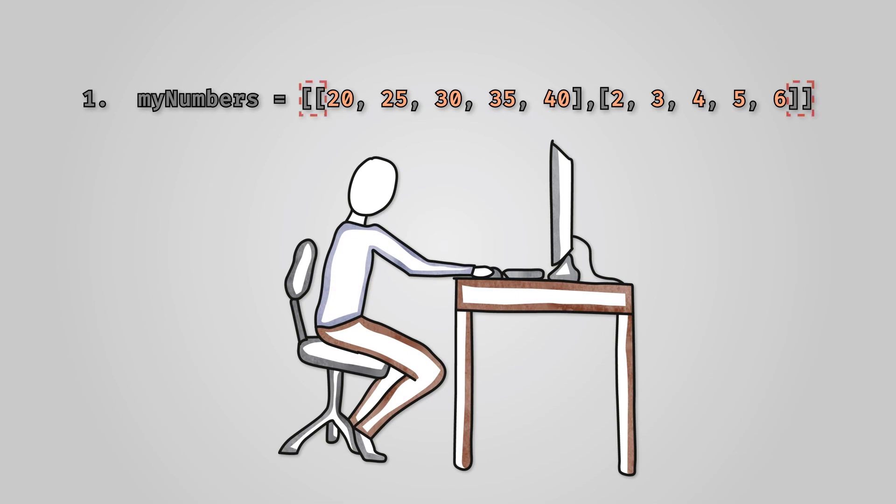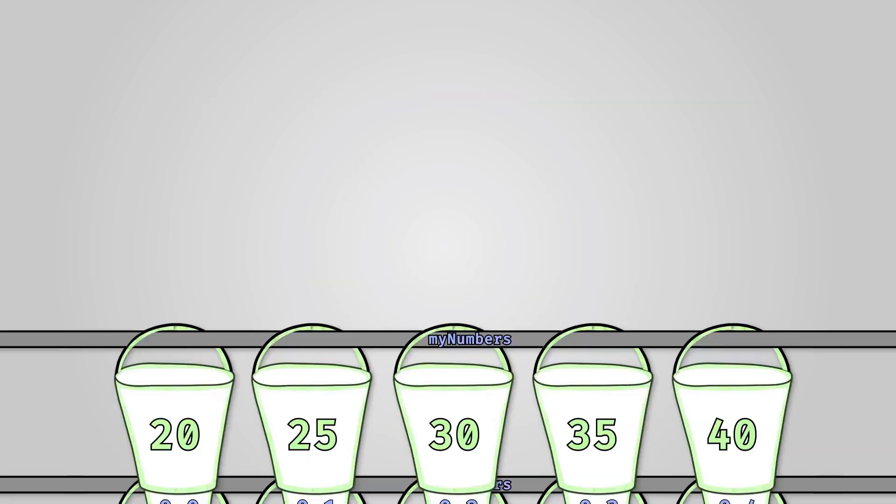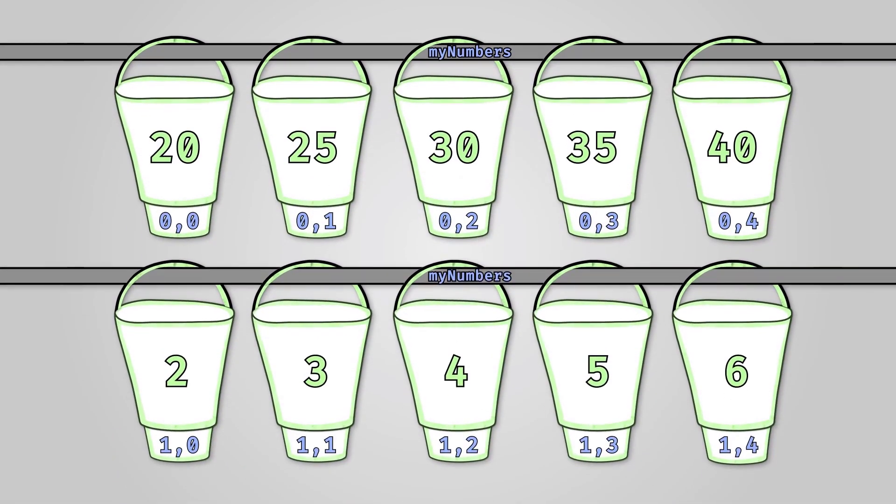You can see in this code that we have a pair of outer square brackets. Inside these square brackets, we define our two lists and separate them by a comma. So we've basically created a list, and that list contains two lists, which are our two rows. This will give us an array which looks like this.